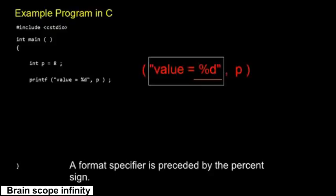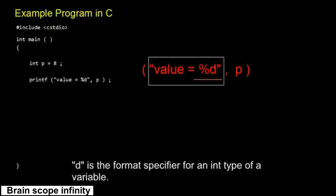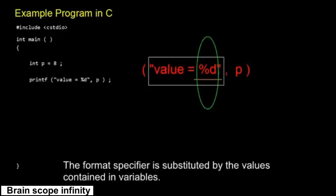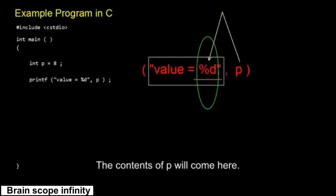A format specifier is preceded by the percent sign. D is the format specifier for an int type of a variable. The format specifier is substituted by the values contained in variables. The variables appear after the format string. The contents of p will come here.